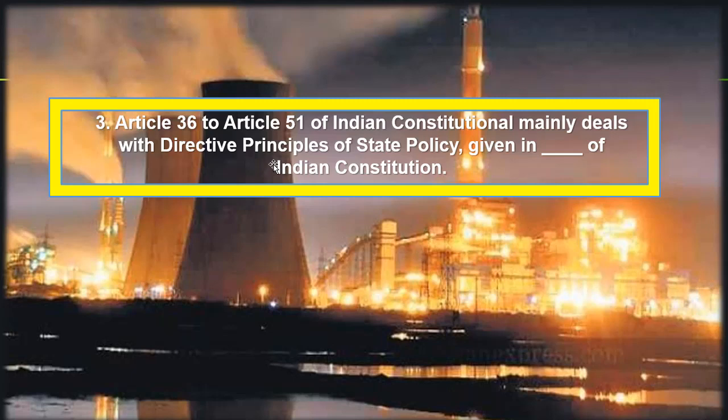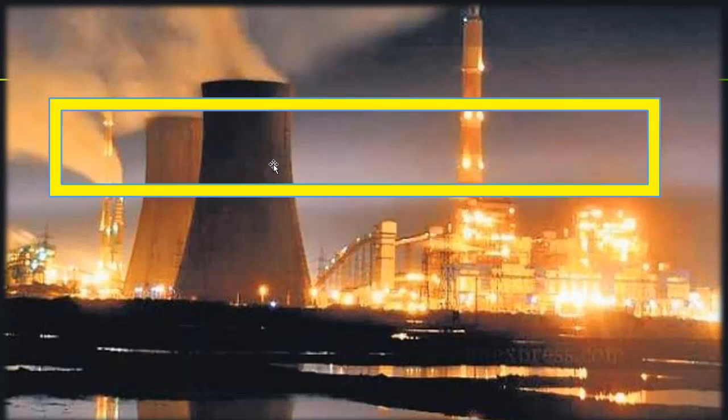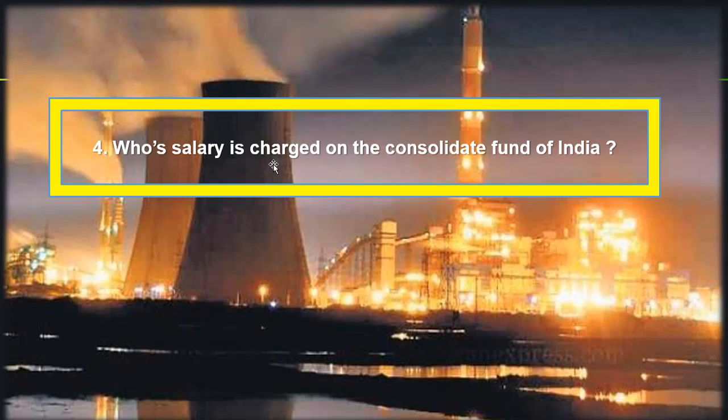The Directive Principles of State Policy are given in Part IV of the Indian Constitution. They are guidelines or principles given to the federal institutions governing the state of India, to be kept in consideration while framing laws and policies. These provisions are contained in Part IV, Article 36 to 51.